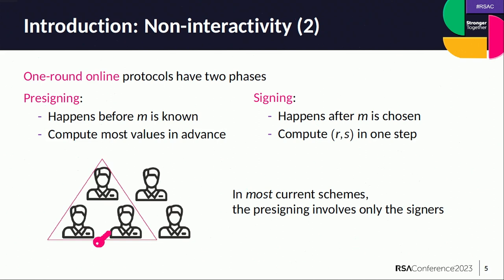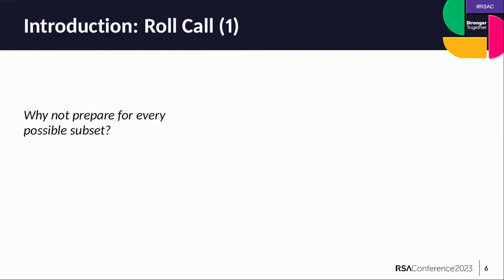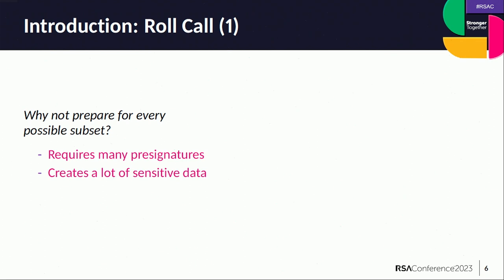This division into a one-round online scheme is where the issue we were having for our use case starts to appear. In most current schemes, the pre-signing only involved the signers — meaning that before you even know what the message is, you have to be sure who is going to be signing. One proposed solution from the literature was to prepare for every subset. In our case of five people, there aren't that many groups of three, but once the group gets large — in our case we had 100 people — it becomes very computationally intensive and creates a lot of sensitive data to store securely.